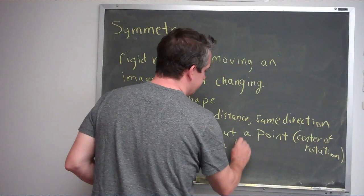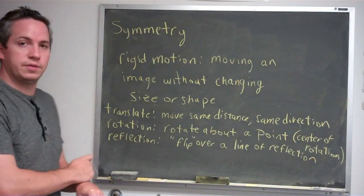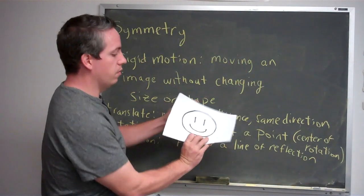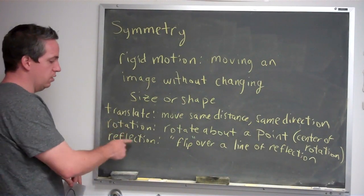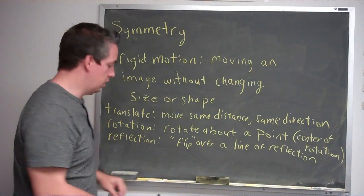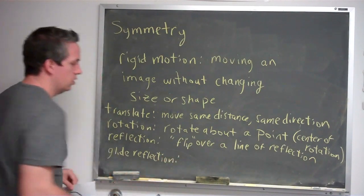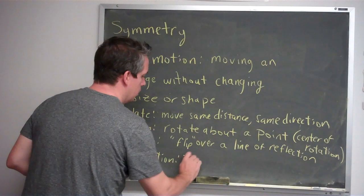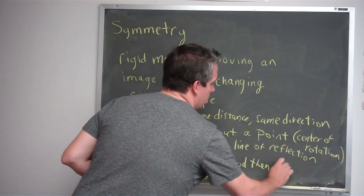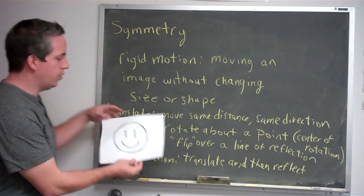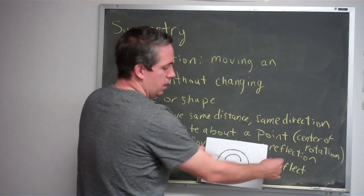That line is called the line of reflection, and a lot of people think of this as mirror images — if I'm flipping over that line, it's like seeing myself in the mirror. And lastly, if I put two of these together — translation and reflection — if I translate and then reflect, it's what we call a glide reflection. So in a glide reflection, you glide or translate and then reflect. If I translate like this and then reflect over that line, I get a glide reflection.